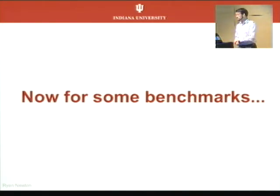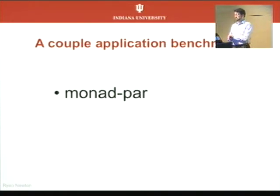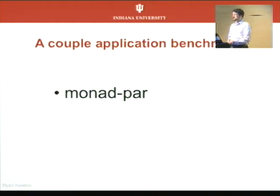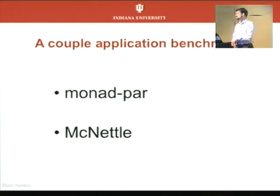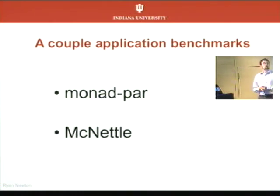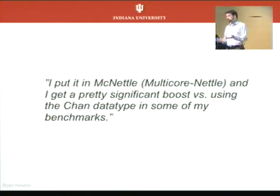With all those caveats, now for some good news. We've been applying these concurrent data structures in a couple of applications. The original reason I got into these weeds is we wanted to do parallel scheduling in Haskell without extending the runtime system, which meant we needed these data structures for work-stealing, specifically for a monad-par scheduler. Since then, a couple of people have started picking up this queue library. One is Nettle, a very interesting DSL for programming reconfigurable networks with OpenFlow. The student at Yale working on this got a significant speed boost versus the unchained data type. That's the reason we're doing this.